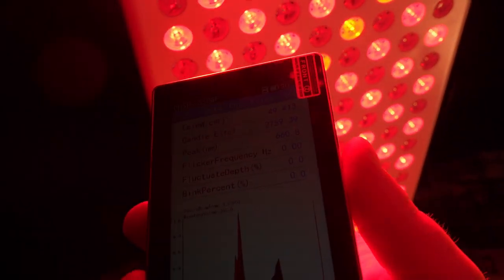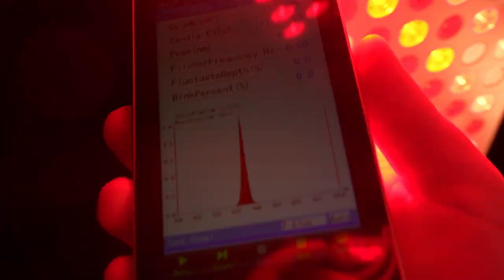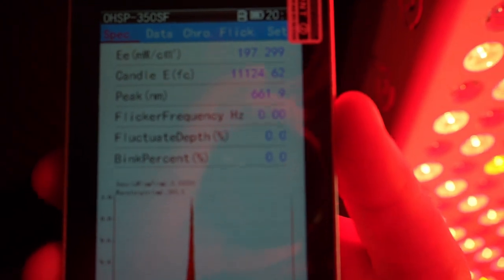Now let's see if we can identify each of the wavelengths. Obviously, we can find the red. It tells us the peak is 661, so that's pretty easy. The 660 is pretty much dead on.